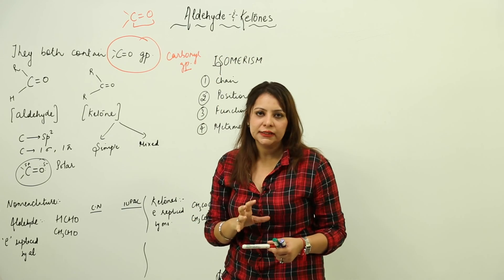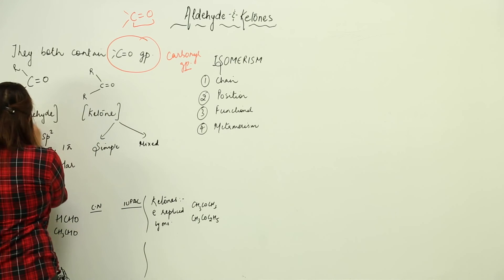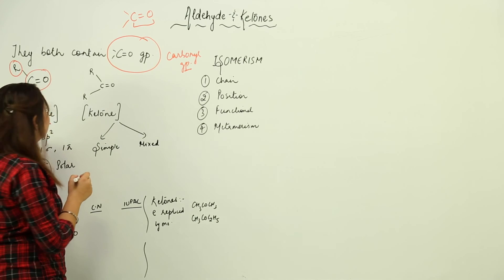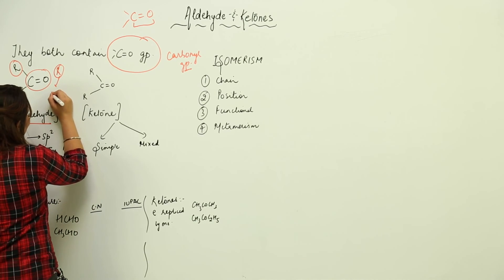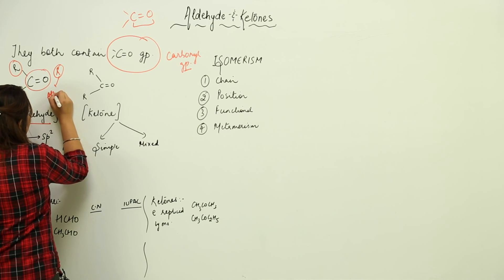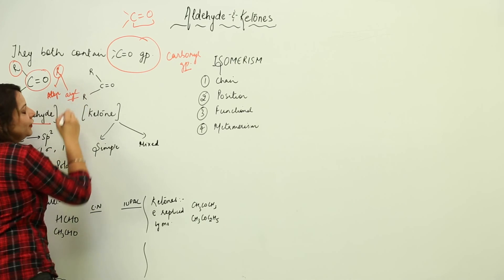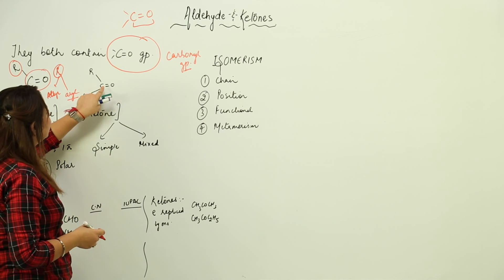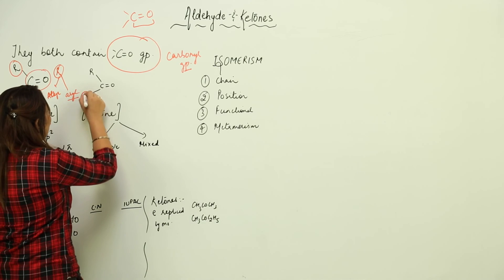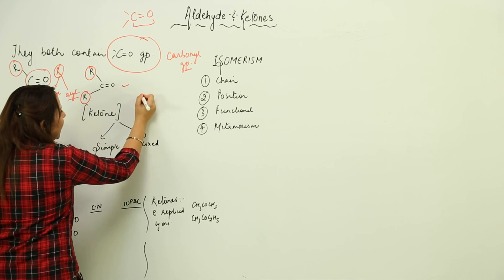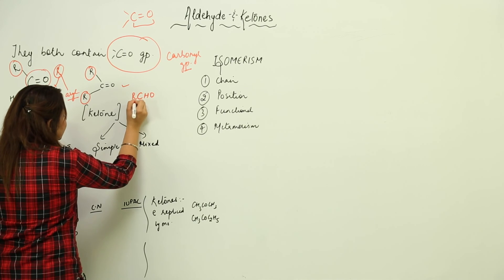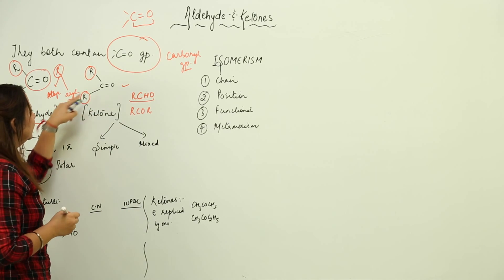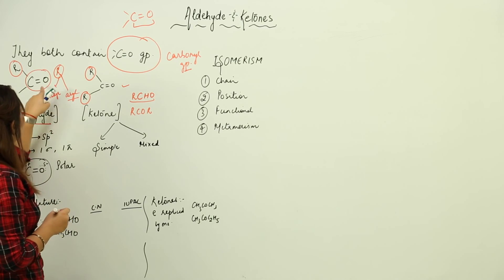Both aldehyde and ketone contain the carbonyl group. In an aldehyde, the carbonyl group is bonded to one H and one R group, where R can be an alkyl or aryl group depending on whether it is an aliphatic or aromatic aldehyde. If the two bonds of the carbonyl are with alkyl or aryl groups, it is a ketone. So RCHO is an aldehyde and RCOR is a ketone.